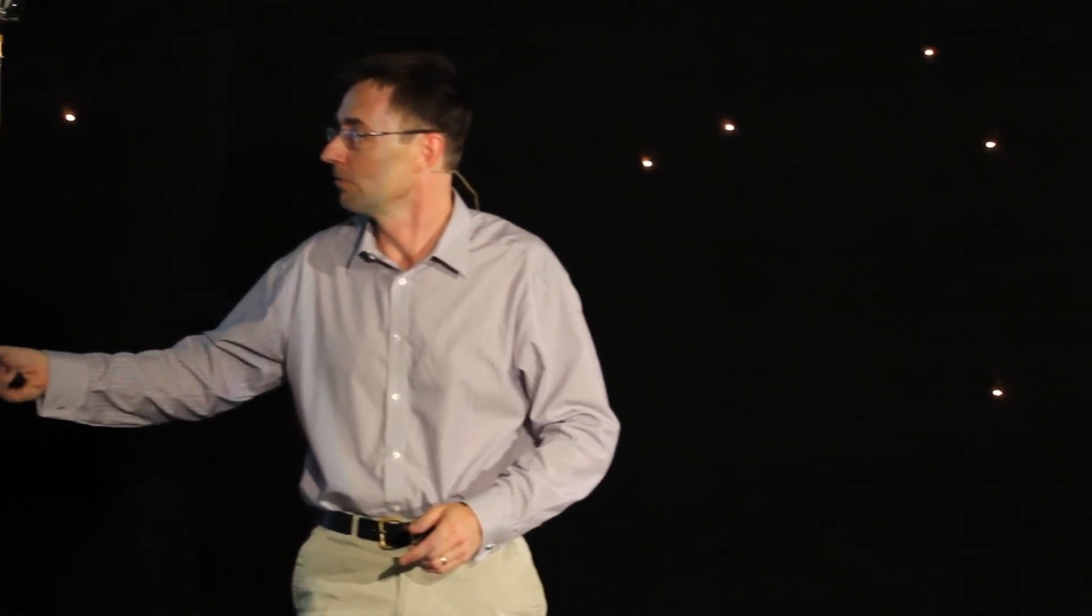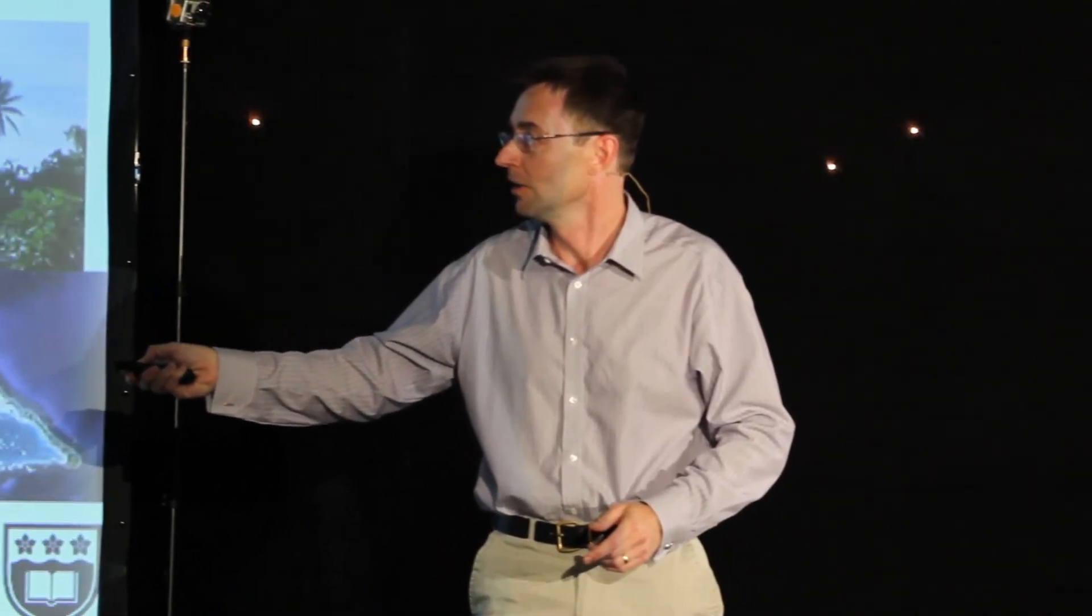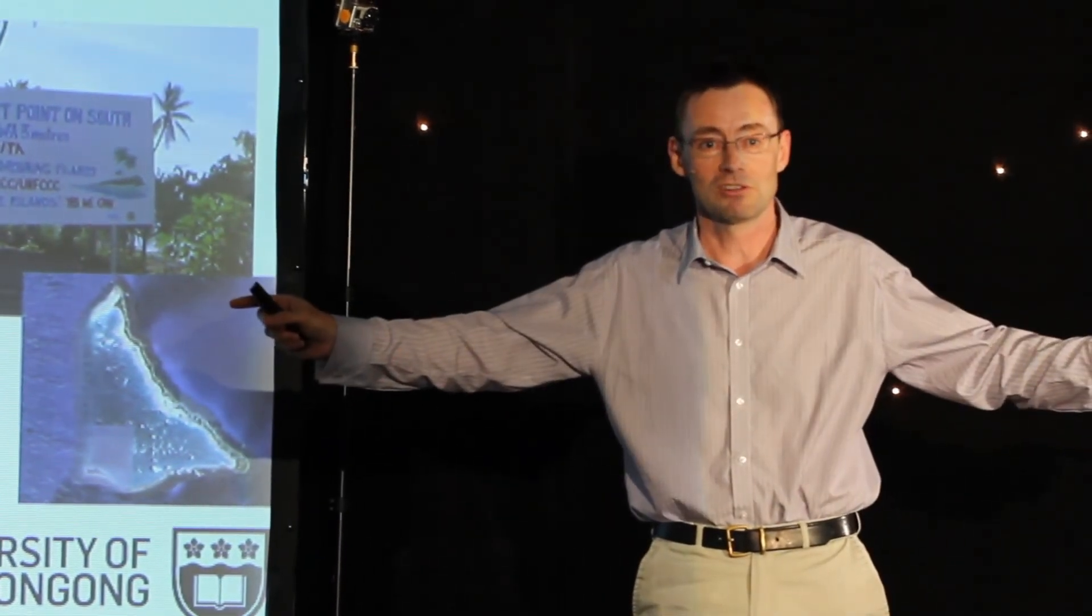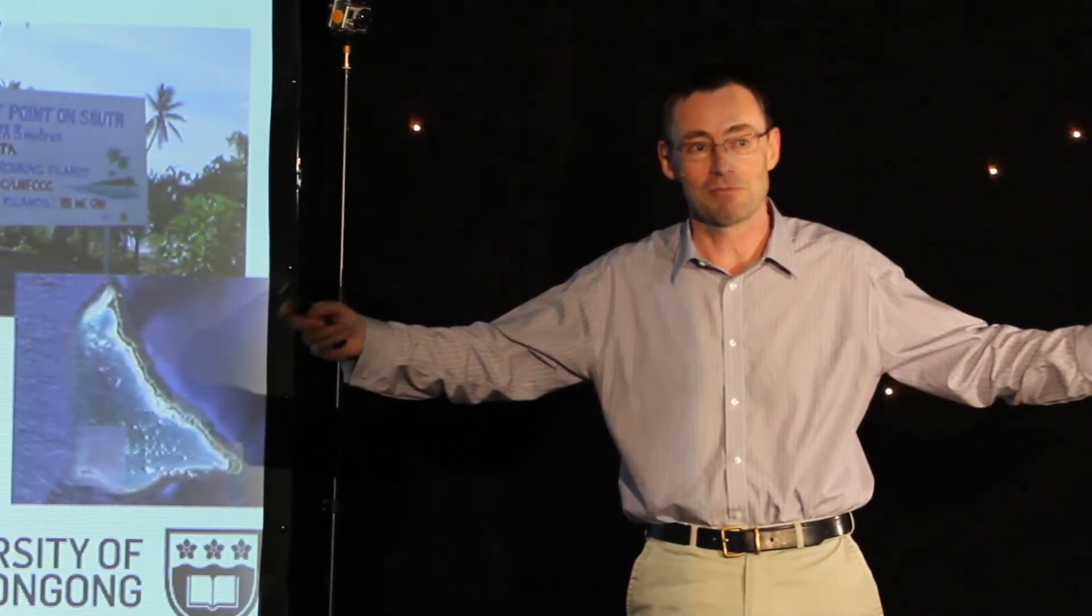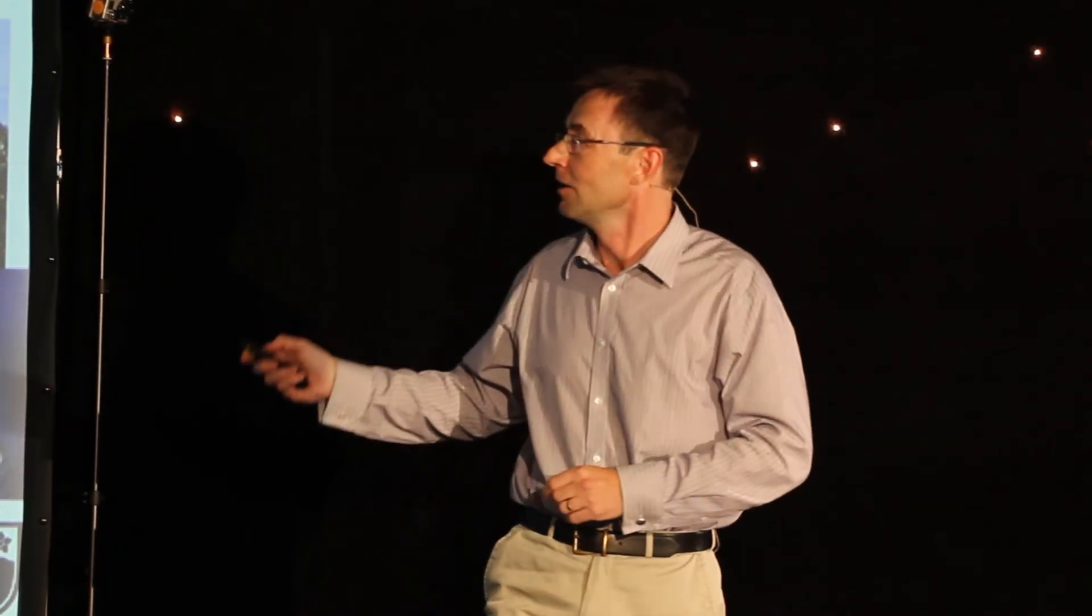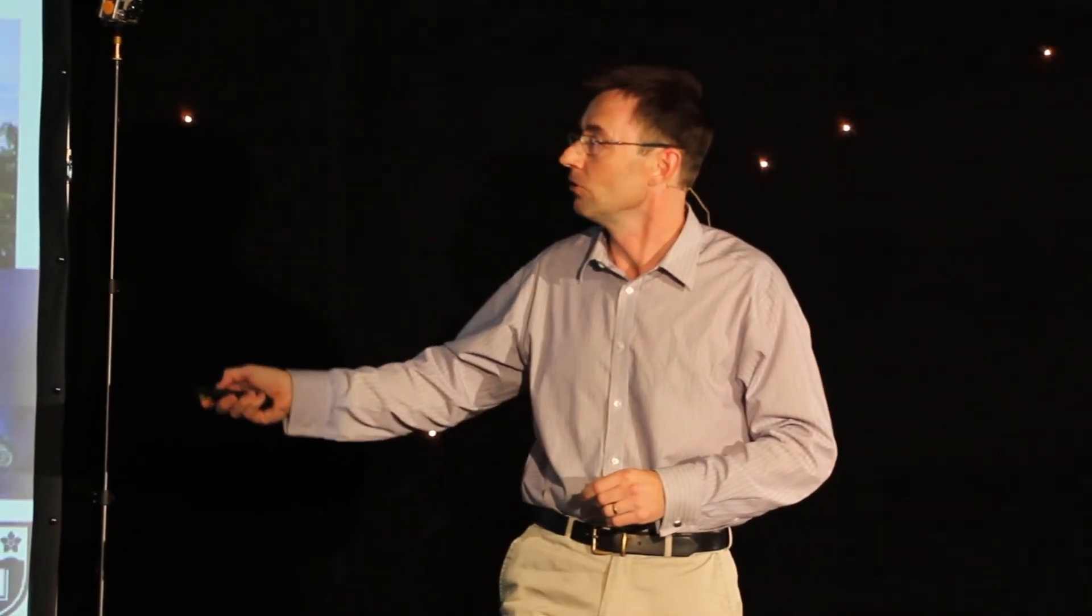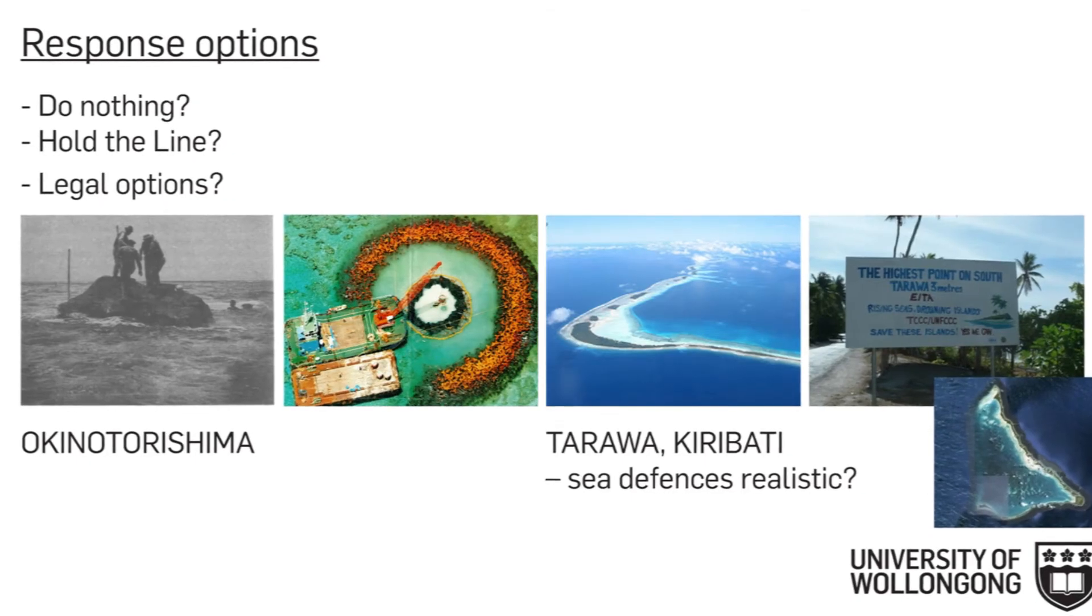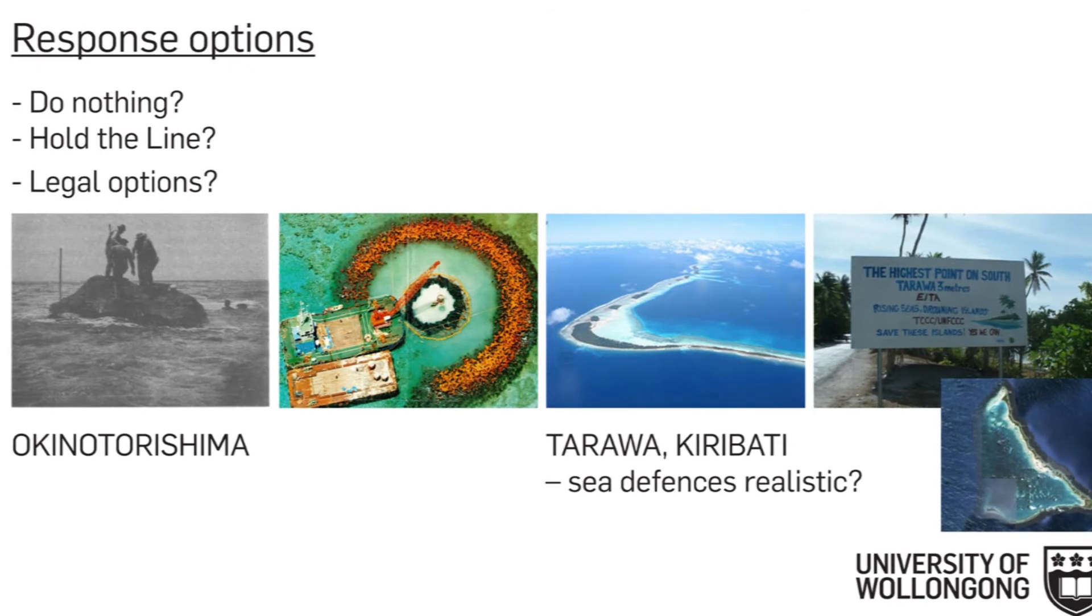Another extreme example, this is the southernmost territory of Japan, called Akinatorishima, from which Japan claims a full 200-mile economic zone. And rather controversial, not every neighbor of Japan quite agrees with this. It's been described as the size of a king-sized bed. It was under threat from erosion in the late 1980s, and the reaction was to protect it. With 360-degree sea defenses that are vertically higher than the naturally formed feature itself.